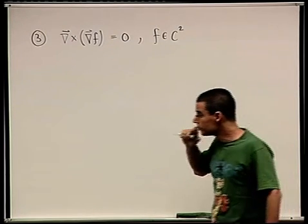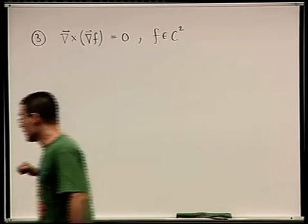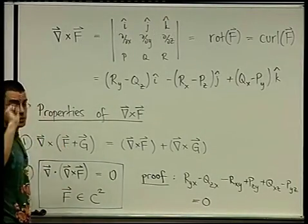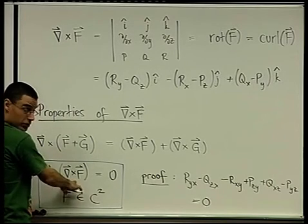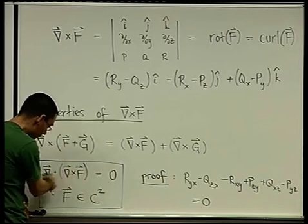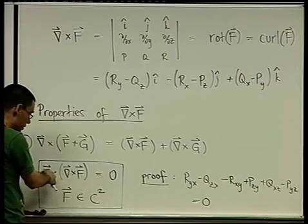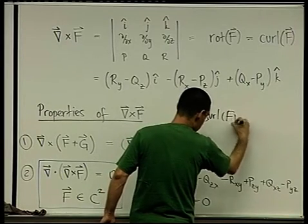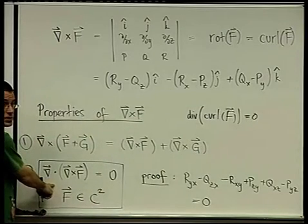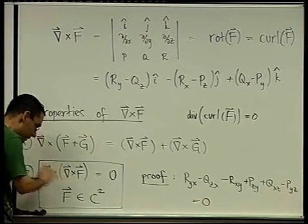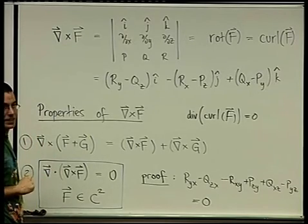A student asks whether the result means the two vectors are perpendicular since the cross product is zero. The answer is no — Nabla is an operator, not a vector, and this is abusive notation. It doesn't make sense to say the operator is perpendicular to the gradient. The statement of the theorem is: divergence of curl of f equals zero. You shouldn't take the notation further than that, because it doesn't make sense.